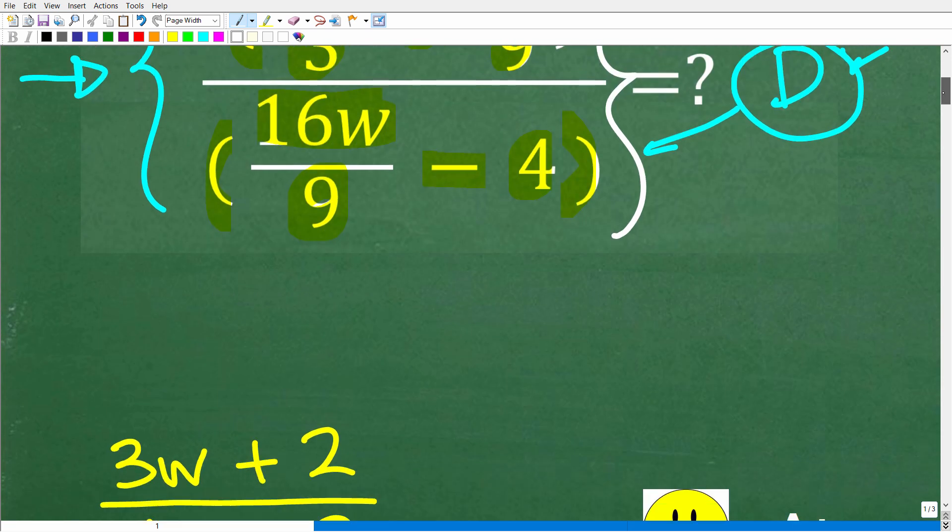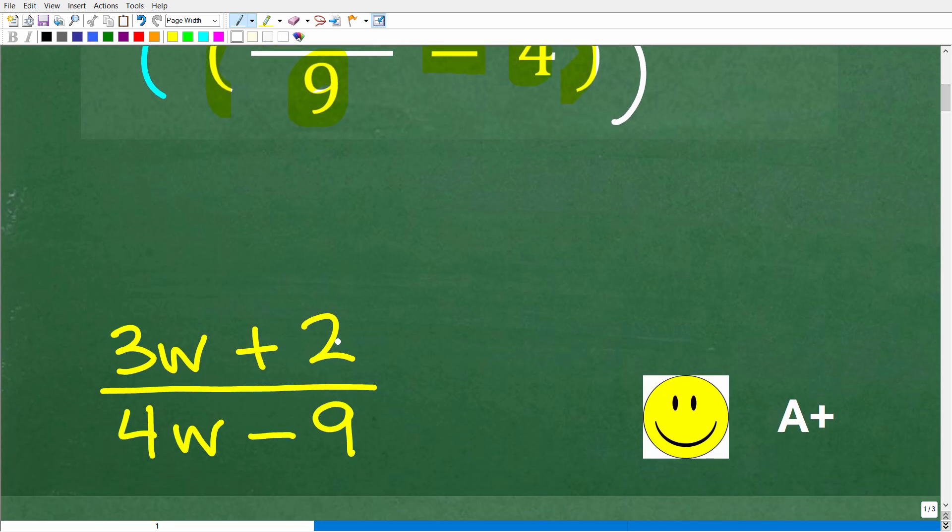Let's take a look at the answer. The correct answer is 3w plus 2 over 4w minus 9. Now if you got that right, you definitely get a happy face and an A plus.